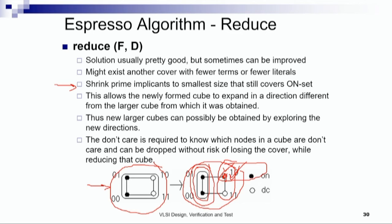After reduction, we can now possibly expand in a different direction. Thus new larger cubes can possibly be obtained by exploring new directions. Don't cares are required to know which nodes in the cube are don't care and can be dropped without the risk of losing cover while reducing. For example, we had two don't cares and could reduce the cover accordingly; if a node was not a don't care and not covered by another prime implicant, we could not have done this reduction.